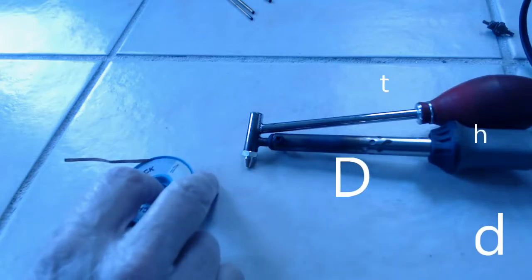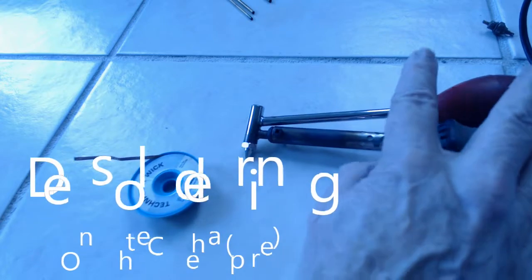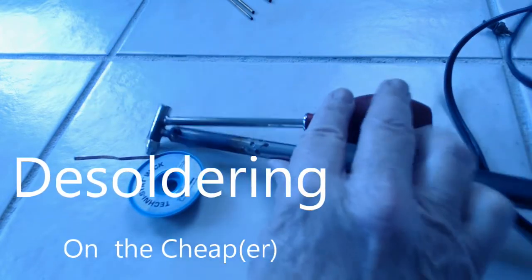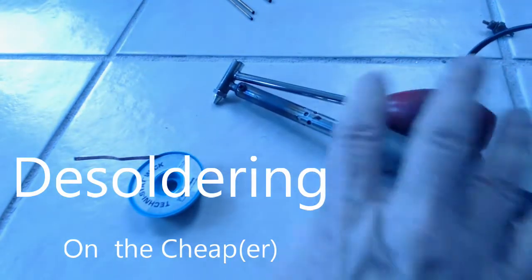Well if you're an electronics hobbyist like me, you definitely have to do some desoldering. There are really two main ways to do this. The first, of course, is the old solder wick.